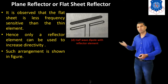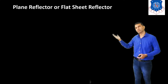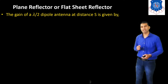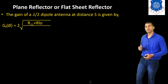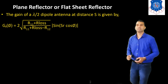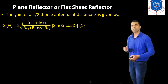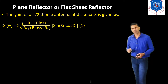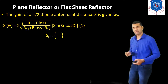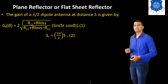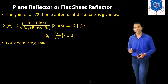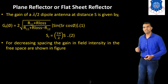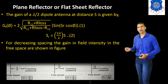The arrangement is shown in this figure. The gain of a lambda/2 dipole antenna at a distance s is given by: G = 2 * sqrt(r11 + r_loss) / (r11 + r_loss - r12) * sin(sr * cos(phi)), where sr = (2*pi/lambda) * x. For decreasing the spacing, the gain in field intensity and free space are shown in this figure.